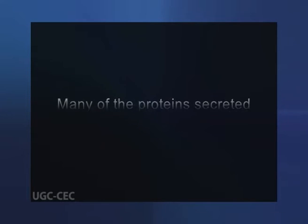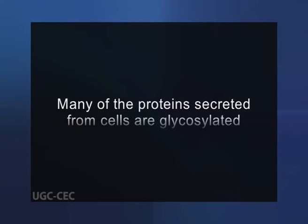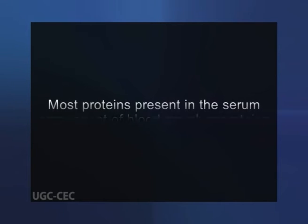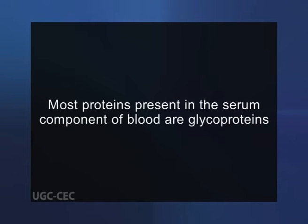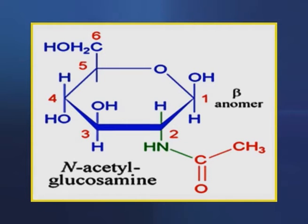Carbohydrates are linked to some soluble proteins as well as membrane proteins. In particular, many of the proteins secreted from cells are glycosylated. Most proteins present in the serum component of blood are glycoproteins. Furthermore, N-acetyl glucosamine residues are O-linked to some intracellular proteins.